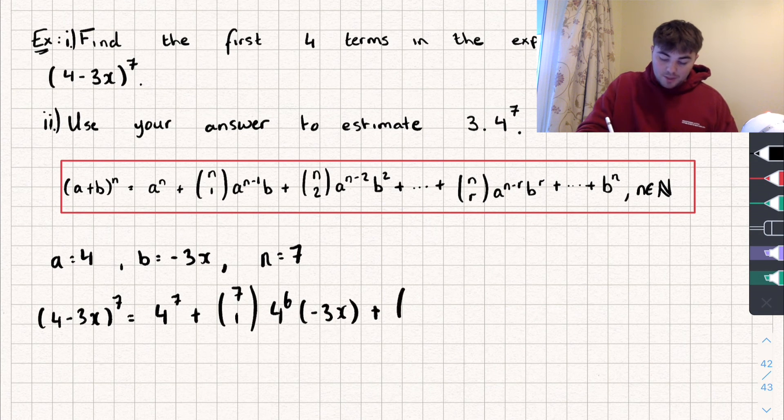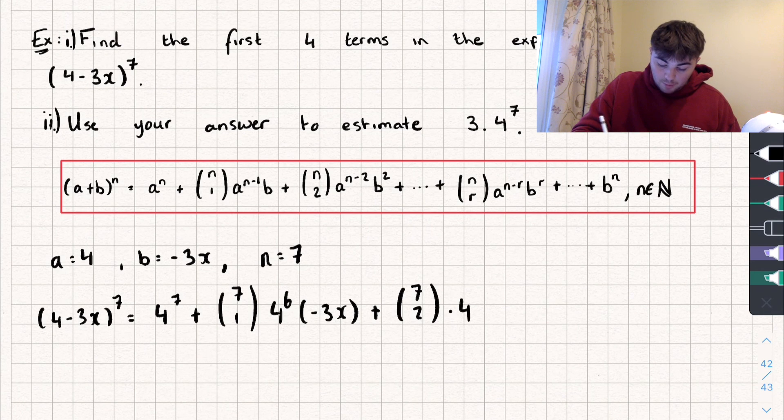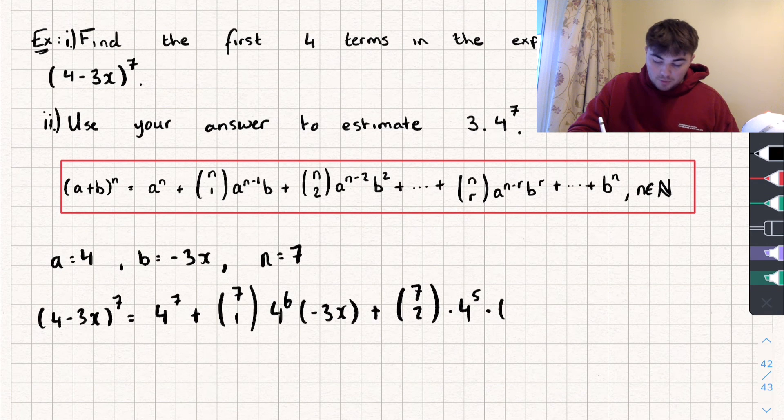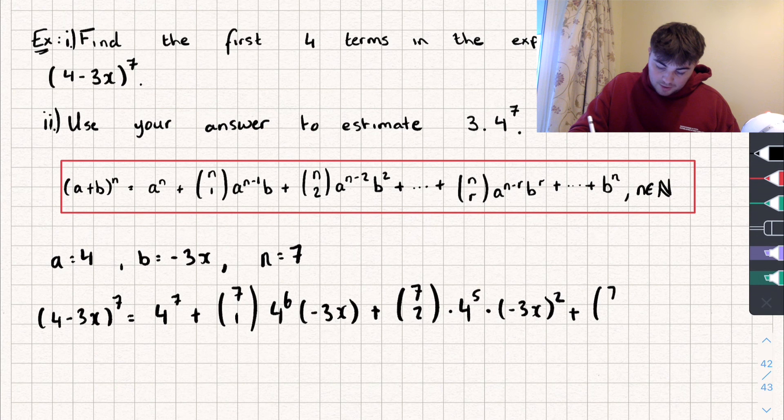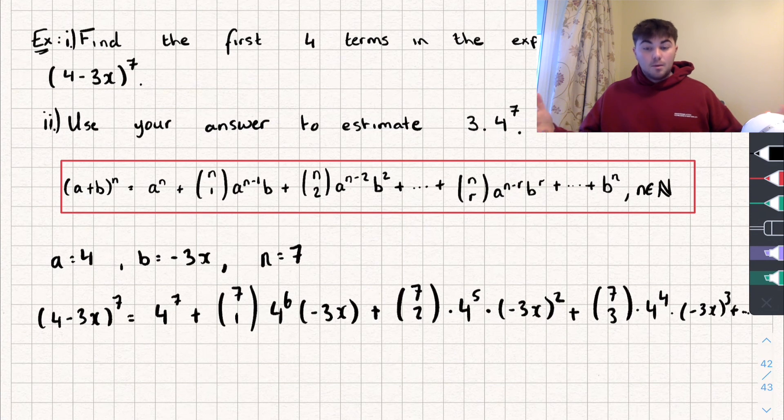The next term is going to be 7 choose 2, and remember we take one away from the power of A, so then that's going to be multiplied by 4 to the power of 5, and then we add one to the power of B, so multiply by negative 3x squared. And then finally plus 7 choose 3, multiplied by 4 to the power of 4, multiplied by negative 3x cubed, plus whatever the other terms were.